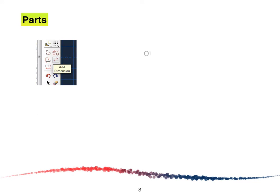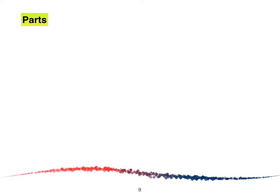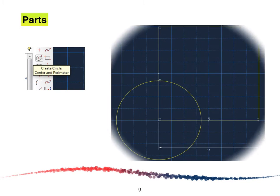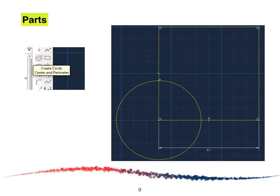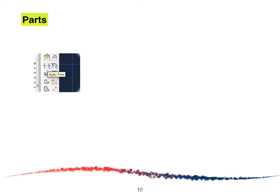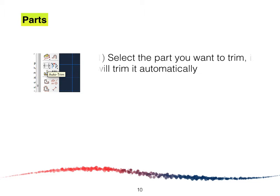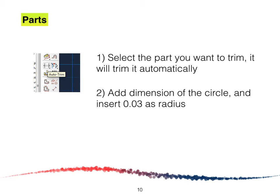Next we are going to add a dimension — select one of the lengths and enter 0.1. Please note that Abaqus does not take any unit, but we encourage using SI units. The next step is to create a circle. After that we are going to trim some of the lines, then add a dimension for the circle and insert 0.03 as the radius, then click Done.